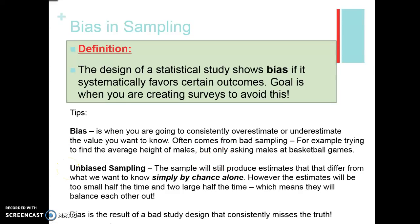What unbiased sampling does is still produce estimates that differ from the true population, but in a balanced way. When I take a good sample of male heights in Fairfax County, I'll get some people close to the true height, some too short, and some too tall — but they even each other out. The estimates differ from the population simply by chance alone, meaning I'm not consistently getting people that are taller or consistently getting people that are shorter. Bias is the result of a bad study design, and it consistently misses the truth in one direction.